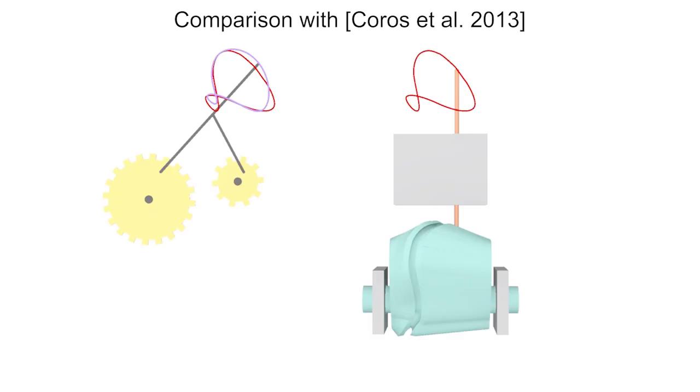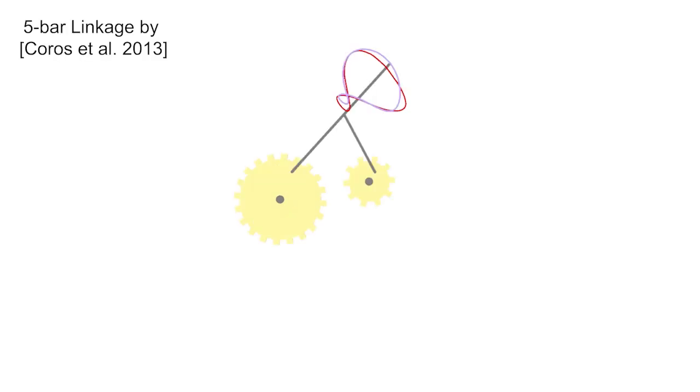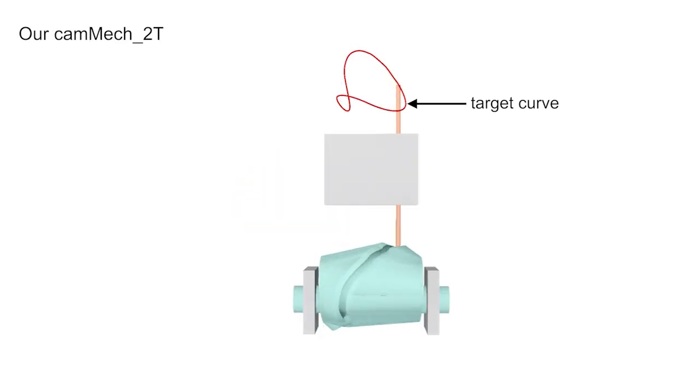Evaluation. Comparison with Koros et al. 2013. The 5-bar linkage designed by Koros et al. 2013 can only approximate a target curve, while our designed cam mech 2T can exactly follow the target curve at the cost of a bulky mechanism.